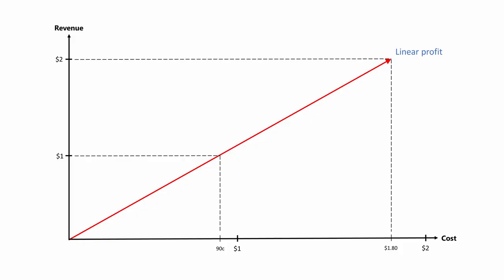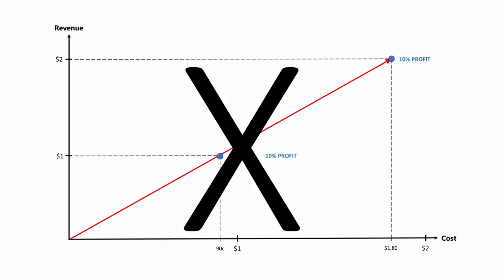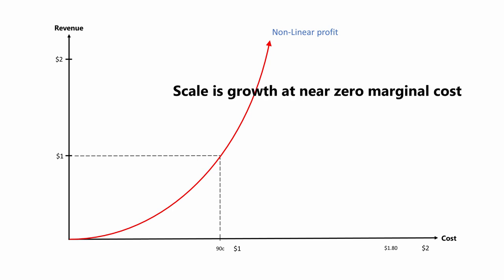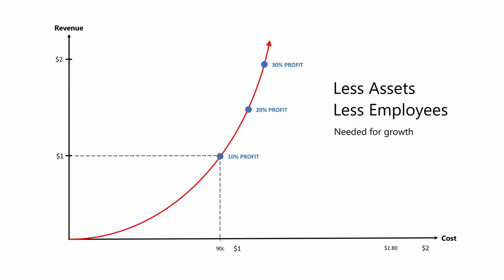So let's unpack scale. What is scale? It's a bit like being a teenager — everyone talks about it, but no one is really doing it. Scale goes to the heart of growth, but it's not any kind of growth. For example, if we grow a business by one dollar and it costs us 90 cents to do so, we're talking about a growth rate of 10 percent. Scale is a different kind of growth which breaks this relationship. Scale is growth at near zero cost, allowing an organization to grow without acquiring more assets or employing more people.